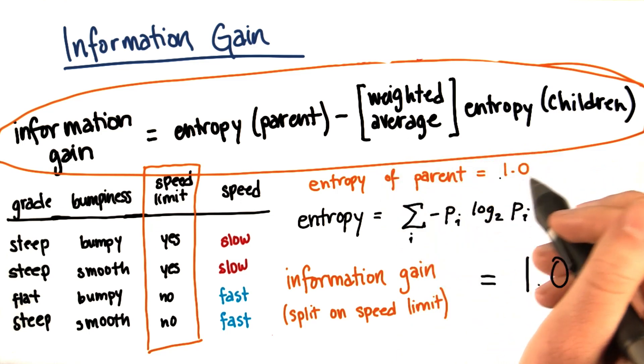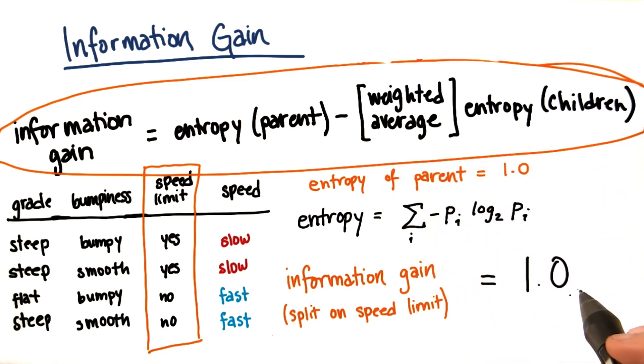We started out with an entropy of 1. At the end, we had an entropy of 0, so the information gain is going to be 1.